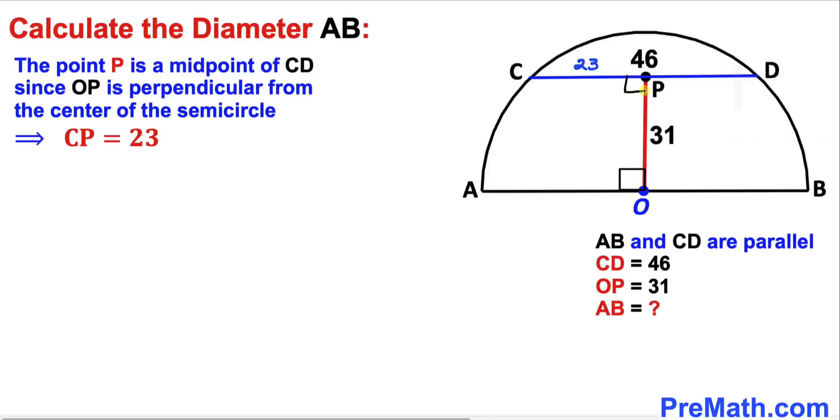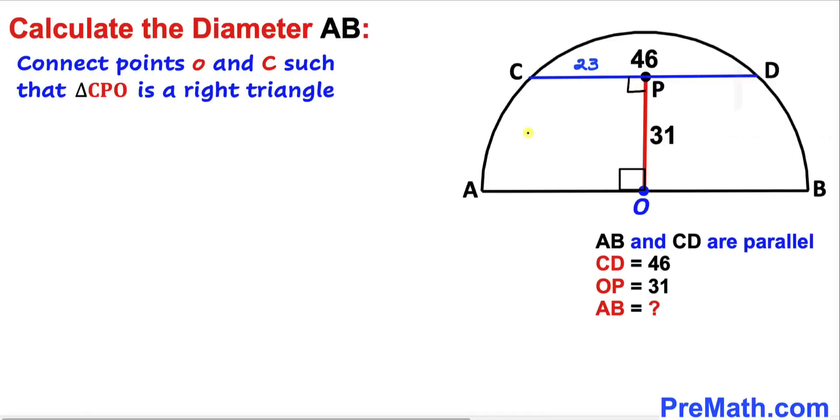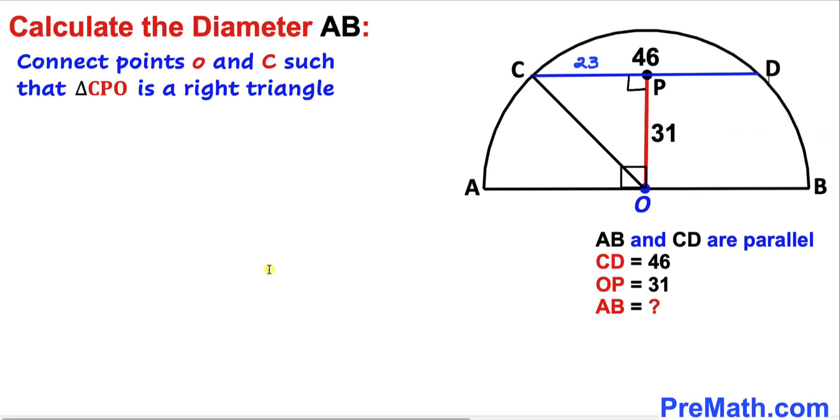Let's connect points O and C. Here's our nicer looking diagram. We can see that triangle CPO is a right triangle, and line segment OC is the radius of the semicircle. Let me call this radius r. Our job is to find the value of this radius r.